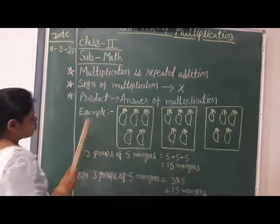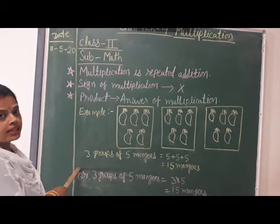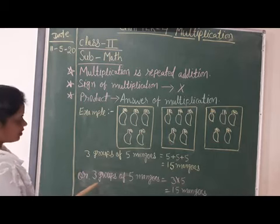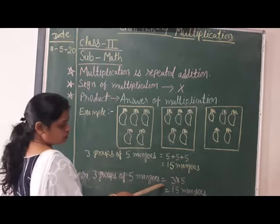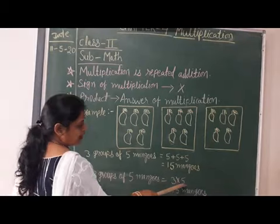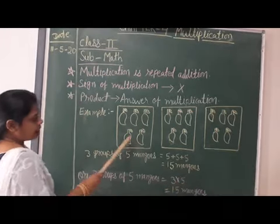Now, we do direct multiplication. Three groups of five mangoes is equal to three multiply five equals fifteen mangoes.